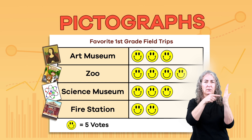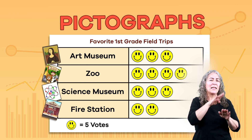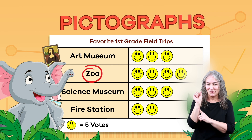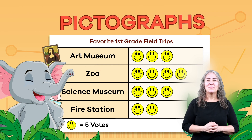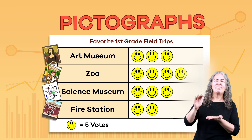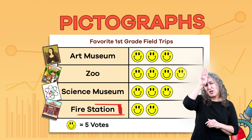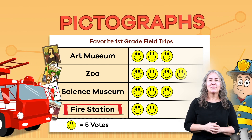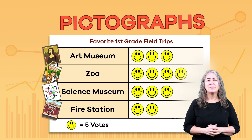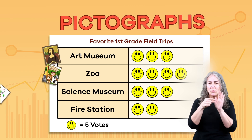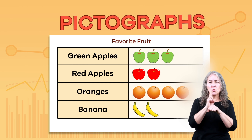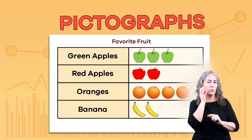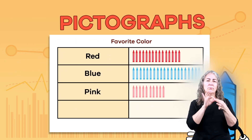Can you tell from the graph which field trip the kids liked the most? Did you say the zoo? It has the most smiley faces. What was the students' least favorite field trip? Fire station! That's right — it only has two smiley faces. Pictographs always use pictures to show information. You could use pictures of apples and oranges if the graph is about fruit, or crayons for a graph about colors.